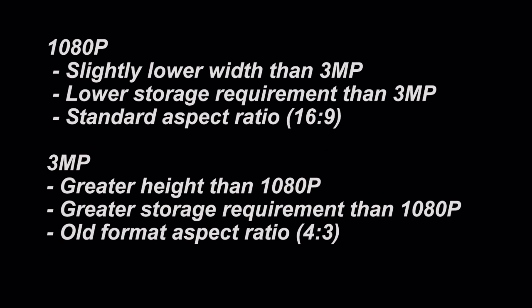In summary, the key differences between 1080p and 3 megapixels: 1080p has a slightly lower width than 3 megapixel at the same pixels per centimetre, a lower storage requirement since we're recording 2 megapixels of data not 3, and it runs the standard 16x9 aspect ratio of current monitors. Moving to 3 megapixels gives greater height than 1080p but also a greater storage requirement, and its 4x3 aspect ratio means we'll have to compromise when displaying on a modern 16x9 monitor.